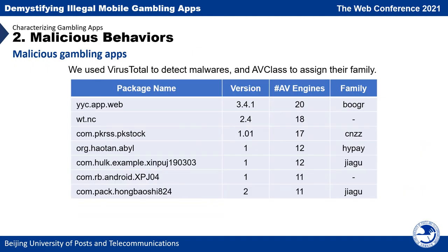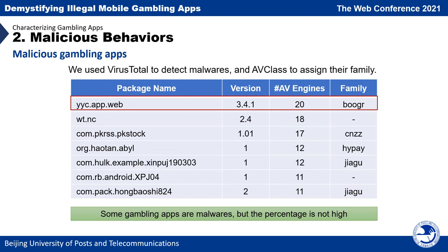The next characteristic is malicious behavior. We used VirusTotal to identify potentially malicious gambling apps and assigned malware family names. For example, one gambling app is reported by 20 antivirus engines and belongs to the Boga family. In fact, some gambling apps can also serve malicious purposes, but the percentage is not high.